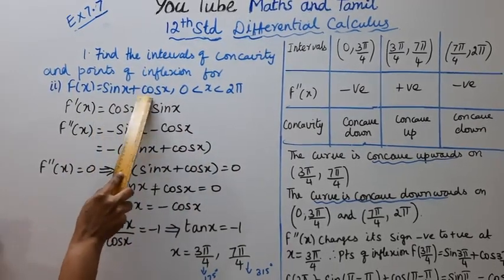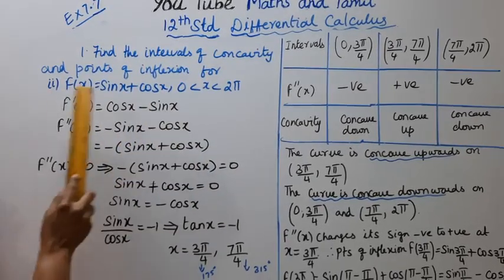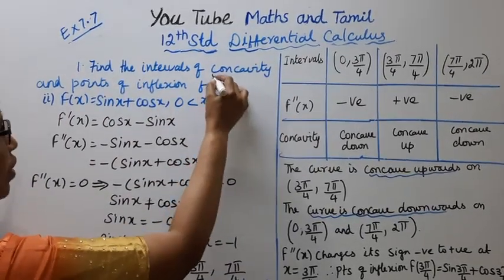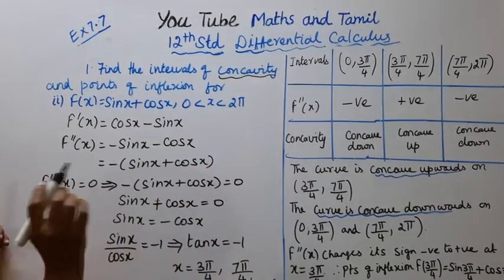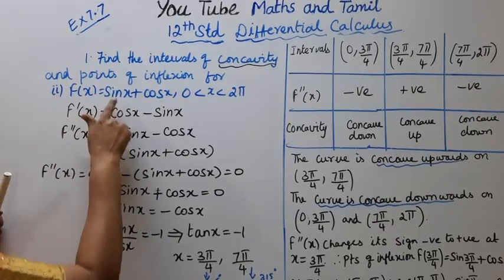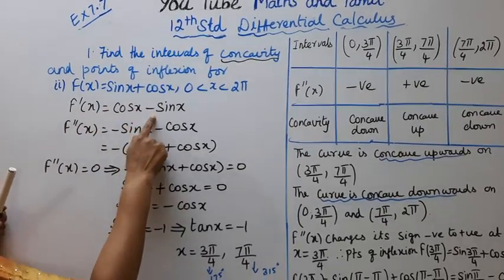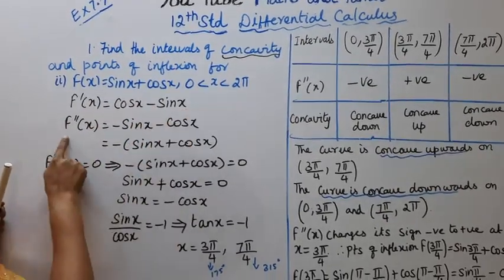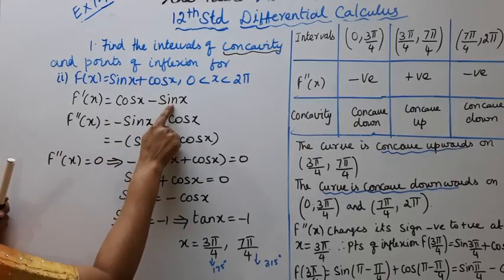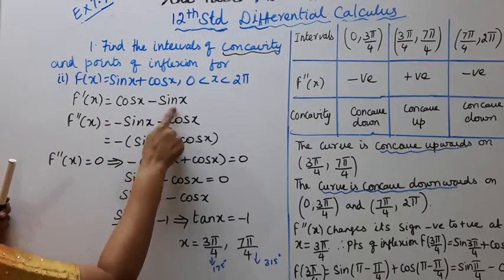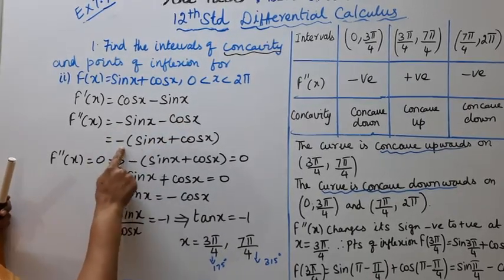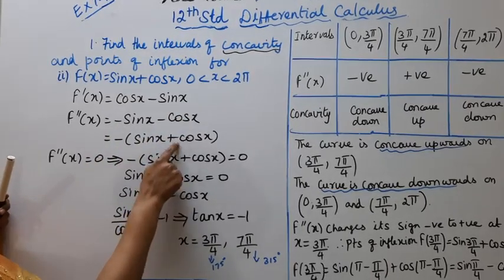f(x) = sin x + cos x. For concavity, we need the sign of f double dash of x. f dash of x = sin x cos x → cos x minus sin x. f double dash of x = cos x minus sin x minus (sin x + cos x), so minus will come to give minus sin x plus cos x.